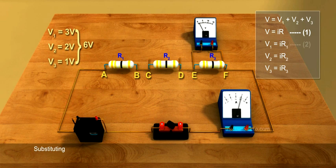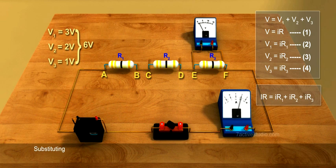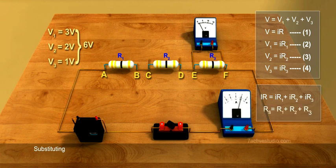Substituting equations 1, 2, 3, and 4 in equation A, we get IR equals IR1 plus IR2 plus IR3, or we get RS equals R1 plus R2 plus R3.